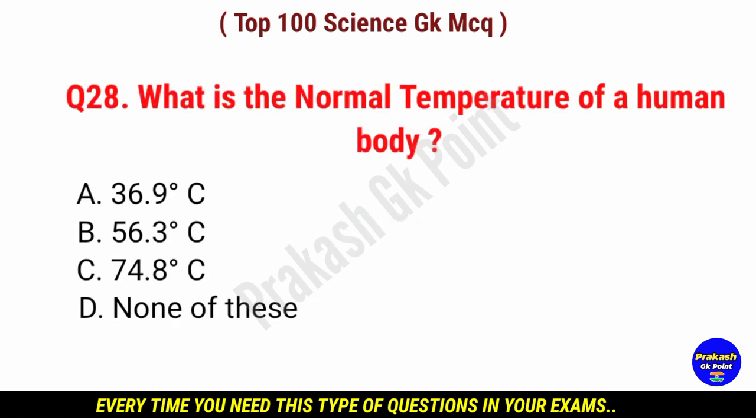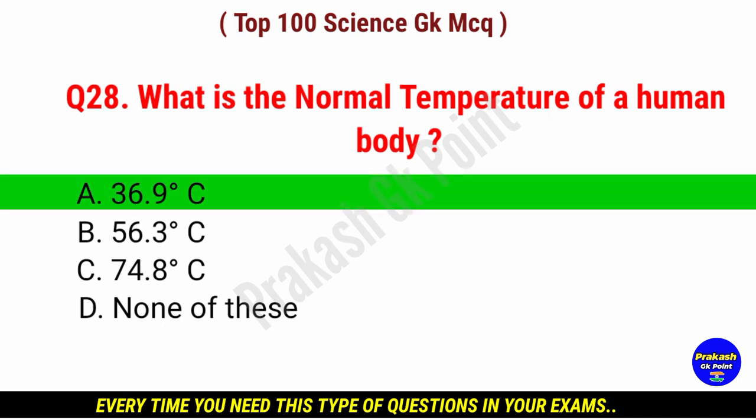What is the normal temperature of a human body? Answer: option A, 36.9 degrees Celsius.